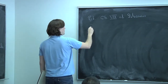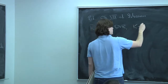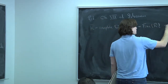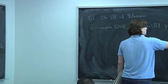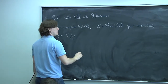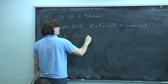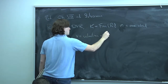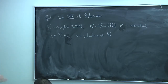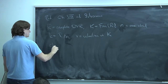Throughout, R is going to be a complete DVR, K is going to be its field of fractions, p is going to be its maximal ideal, little k is the residue field, and v is the valuation on K. We can work with a general complete DVR for most of what I'm going to say. I'm going to make a simplifying assumption that the characteristic of the residue field is not 2 or 3.